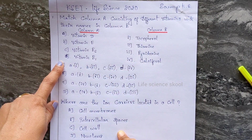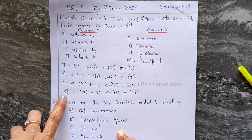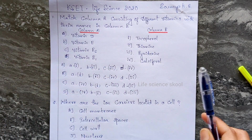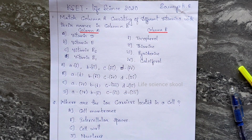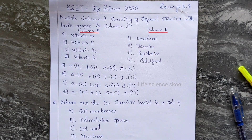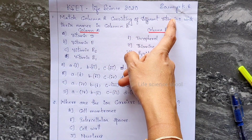Column B continues: third one pyridoxine, fourth one calciferol, and options A, B, C, and D are given. So the question is what are vitamins here?